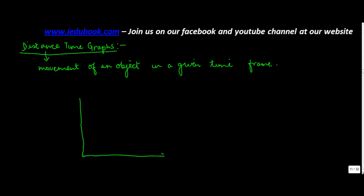You have your x-axis and your y-axis. On the x-axis you show the time and on the y-axis you show the distance. Now if the object is moving at a uniform speed...